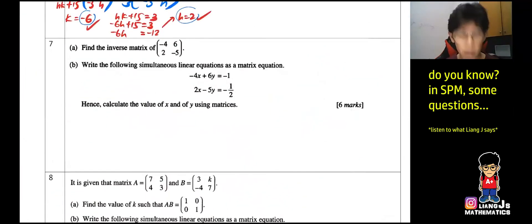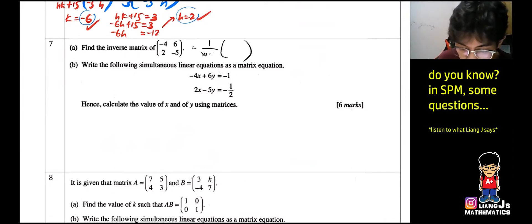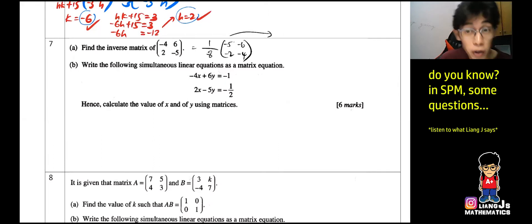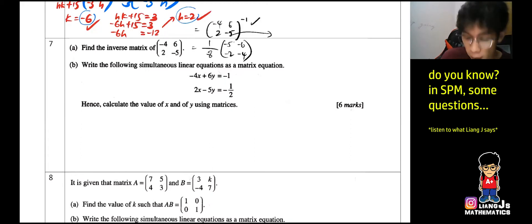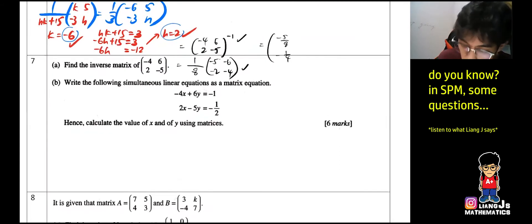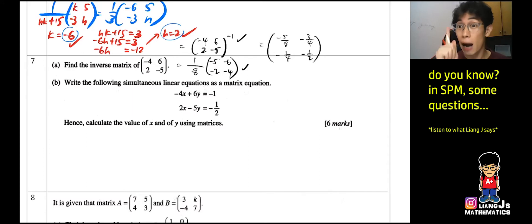Look at question 7a. This will be 1 over (20 minus 12), giving determinant 8. Then the adjugate matrix entries are negative 5, negative 4, negative 6, negative 2. Stage 1 gives you [negative 4, 2; 6, negative 5], then stage 2 applies the determinant, and stage 3 produces fractions: negative 5 over 8, negative 1 over 2, negative 6 over 8 giving negative 3 over 4, and negative 1 over 2.